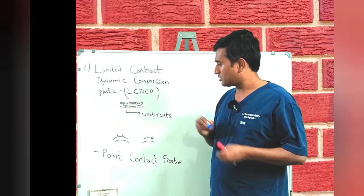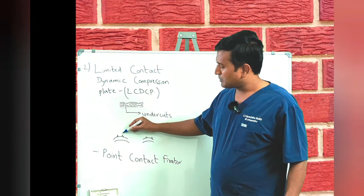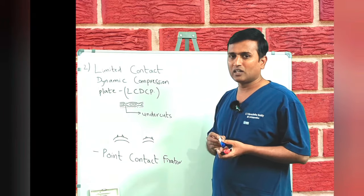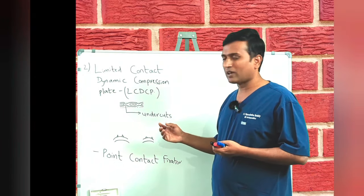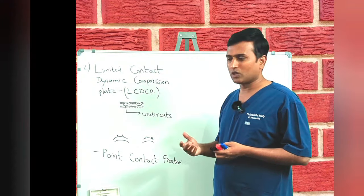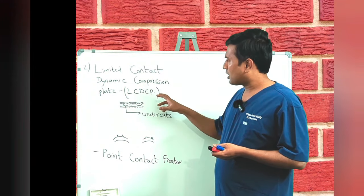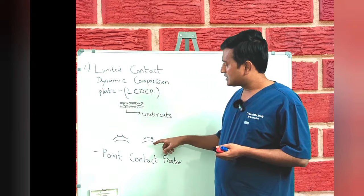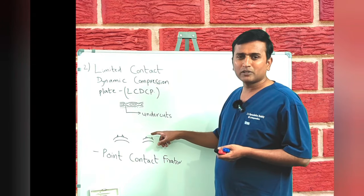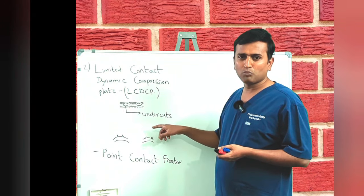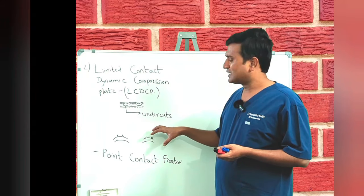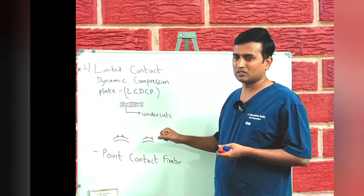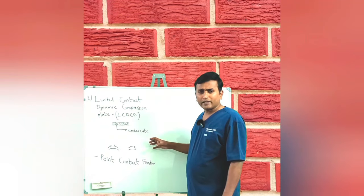When you take a cross section, in the DCP plates it was leaving a rectangular footprint, which was leading to fractures after implant removal. With the LCDCP, it leaves a trapezoidal footprint over the bone, which was a little better compared to the DCP plate complications.